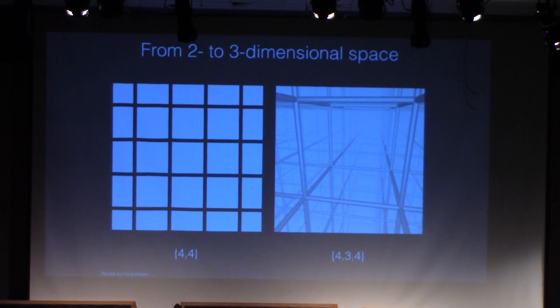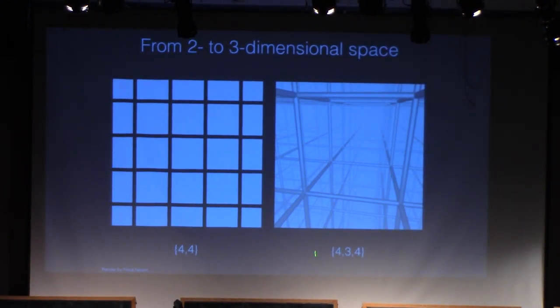When we move up a dimension, the first two numbers stay the same. 4-3 would be what shape? Cube. These are squares that meet three around every vertex. You can look at the corner of the room to see that. The next number here is how many of those meet around every edge. In the Minecraft tiling of space, you have four cubes that meet around every edge.